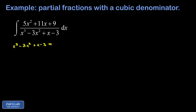This denominator is nicely set up to use factoring by grouping. Looking at the first two terms and the second two terms, I see the potential for a common binomial factor. I take the greatest common factor out of the first pair — that's x squared — rewriting as x squared times (x minus 3). The second pair is just 1 times (x minus 3), so x minus 3 factors out, giving us x minus 3 times (x squared plus 1).